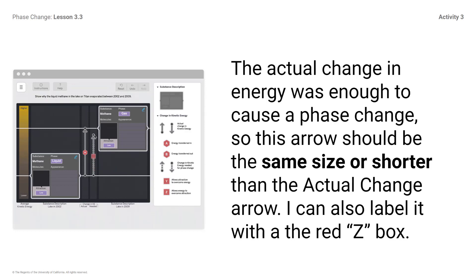I can also label it with the red Z box. For this model, I need to show that the lake evaporated. For evaporation to occur, I need to show that the energy change needed for the phase change model needs to be enough to overcome attraction. This label will help demonstrate that.